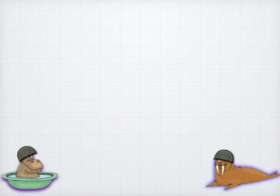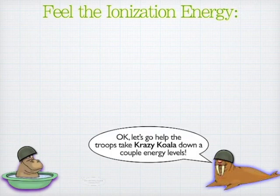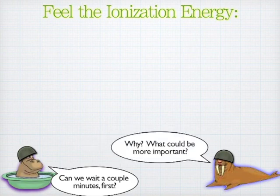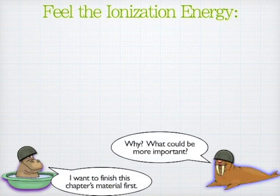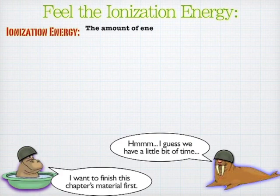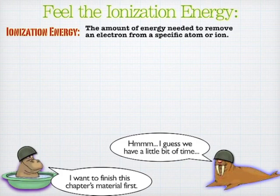Ionization energy is the amount of energy it takes to remove an electron from an atom or from an ion, depending on what you're looking at. We'll see what these two are up to — they've been hunting crazy koala for a while here now. That's the amount of energy needed to remove an electron from an atom or an ion.